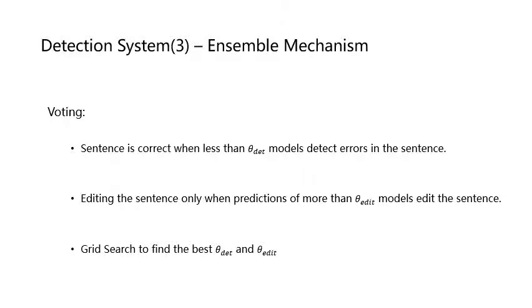We train more than 100 of the above two models and employ a two-stage voting ensemble mechanism to improve the model's performance. In the first stage, the sentence is regarded as correct unless theta detection models detect errors in the sentence. In the second stage, a word level voting is applied. If more than theta edit models edit one position, this position is considered wrong. In the experiment, we use grid search to choose theta detection and theta edit according to the F1 score on the validation data.